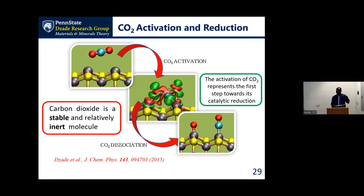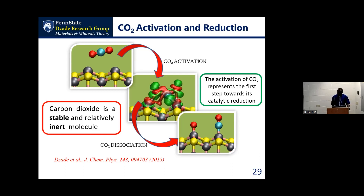We want to get our CO2 to anchor on the catalyst surface — adsorb on the surface. It will change from being a linear molecule to a bent species. The bending simply means it has accepted electrons from the catalyst surface, losing its linearity and now becoming reactive. Now it is interested in picking anything that comes around. Therefore if hydrogen is around, that activated CO2 can pick hydrogen and turn into formic acid, ethanol, and all kinds of things we are interested in. But the question is: which materials would do that for us? That is why it's a materials problem.